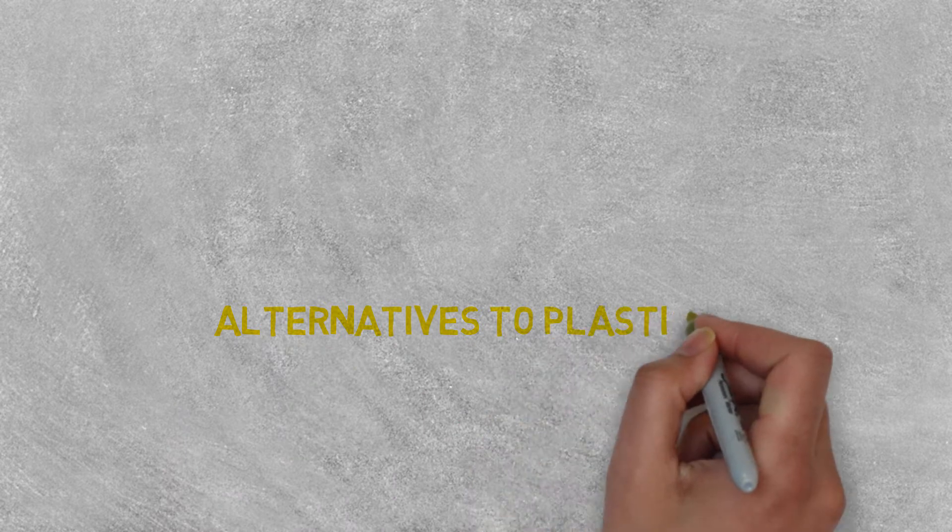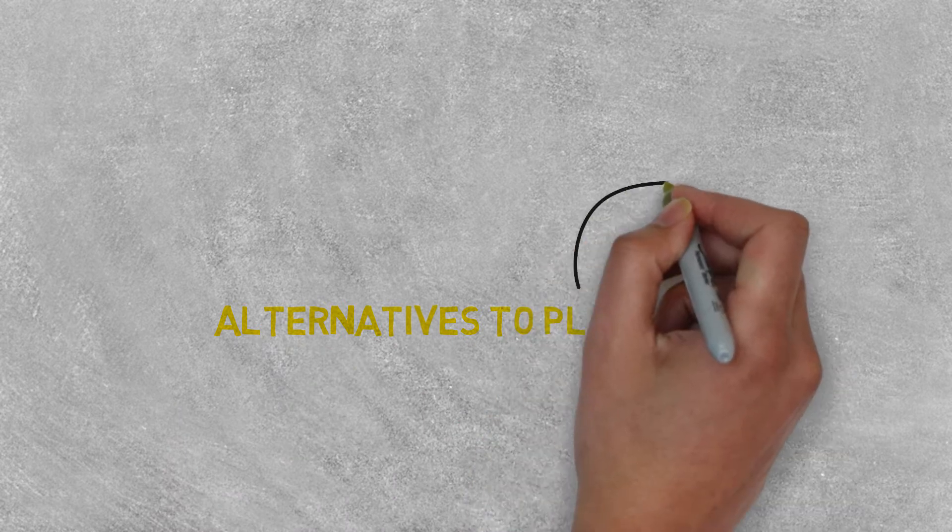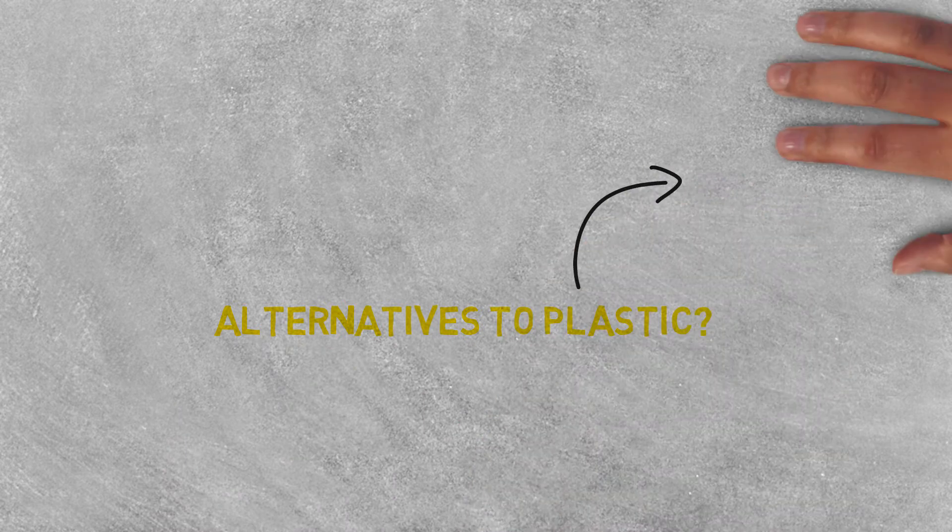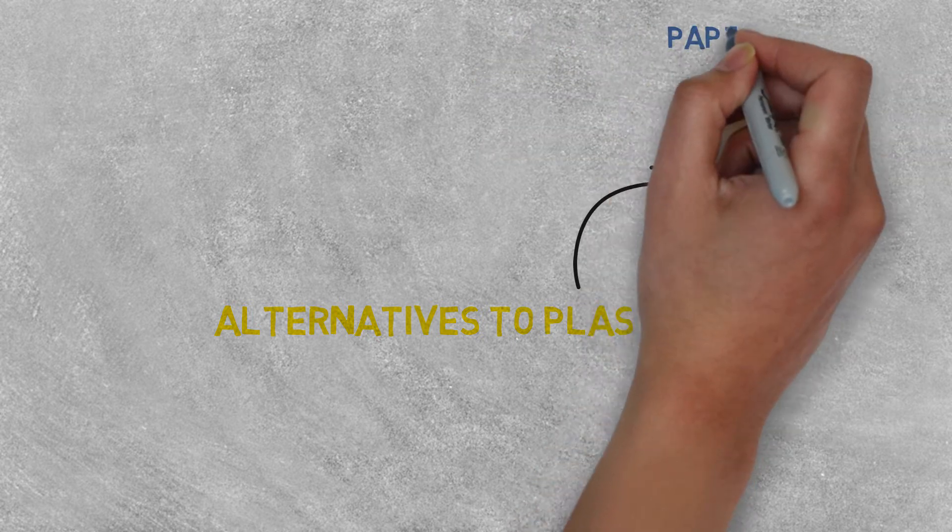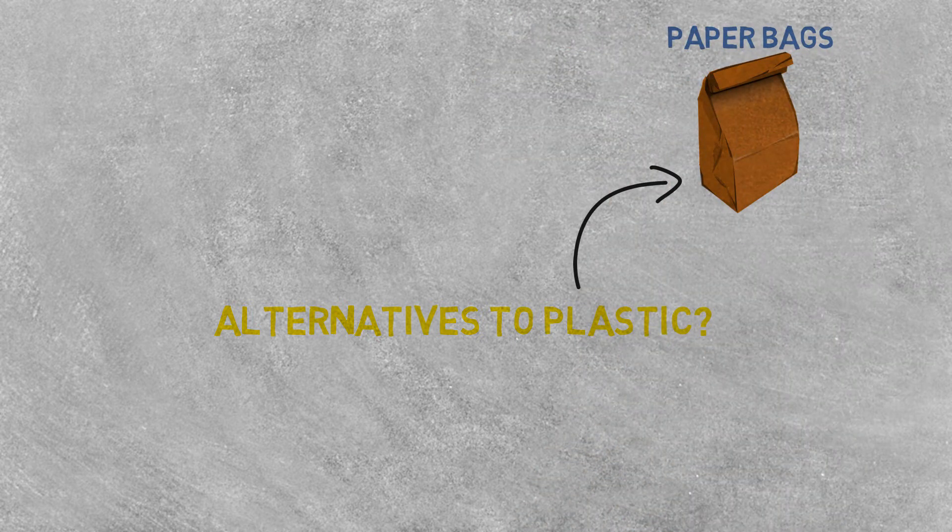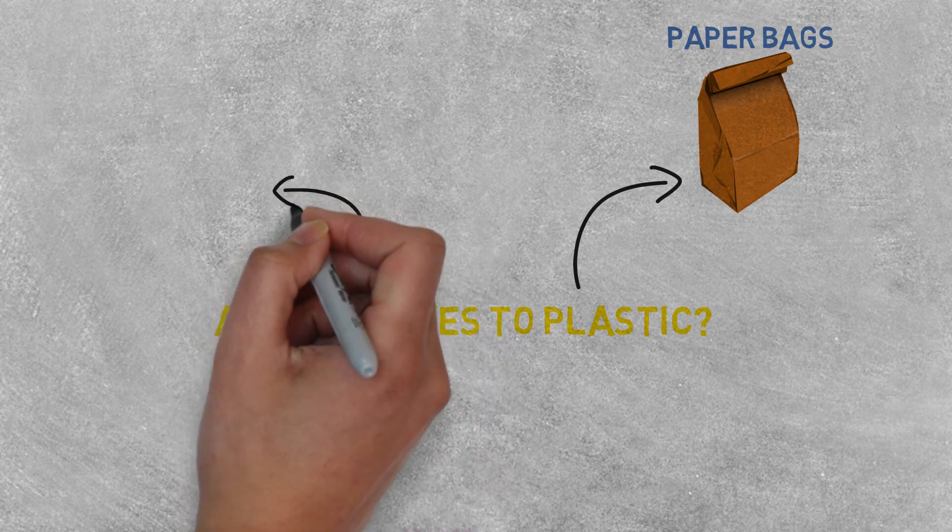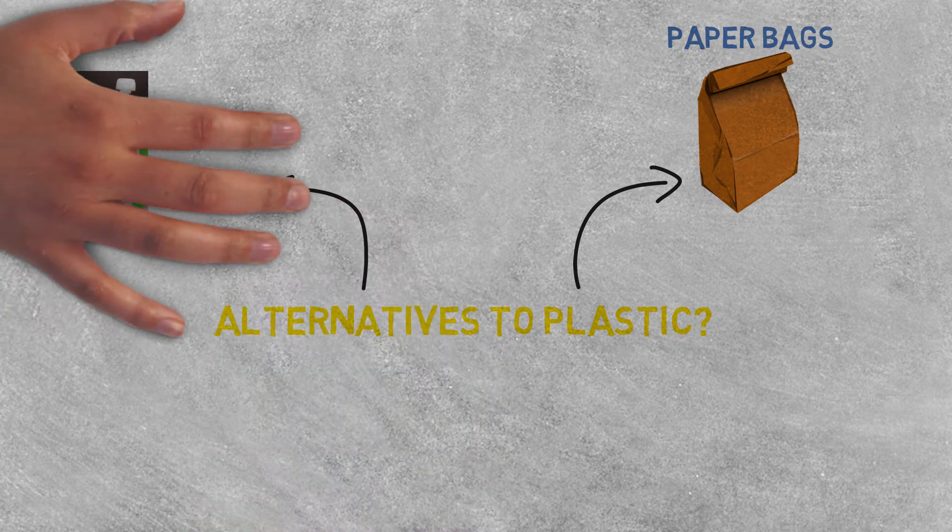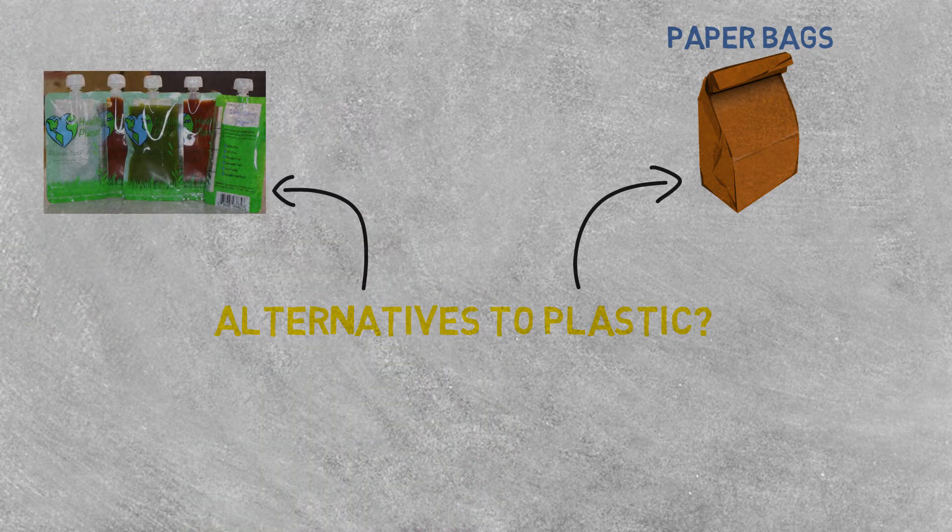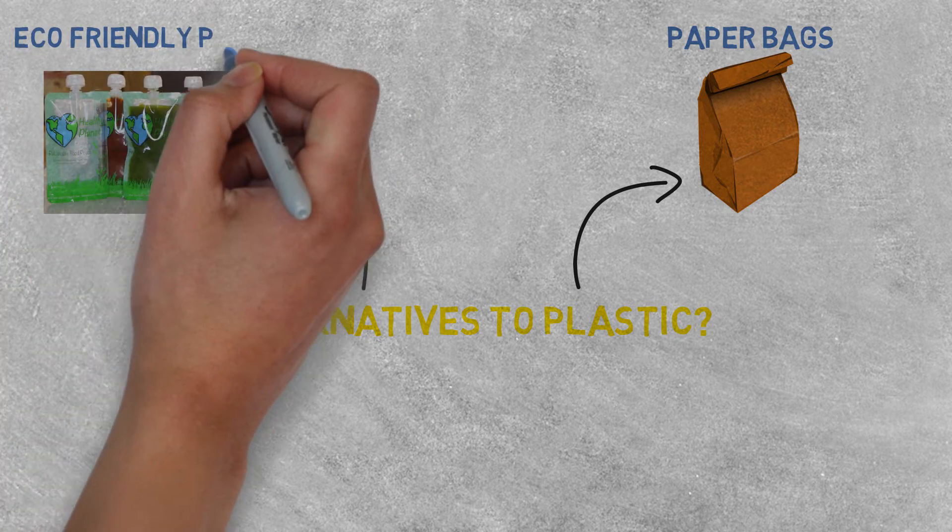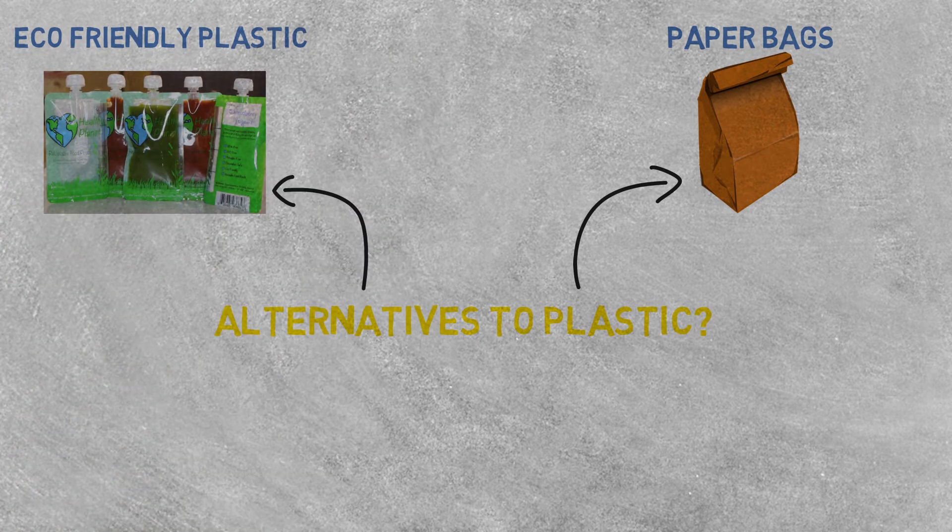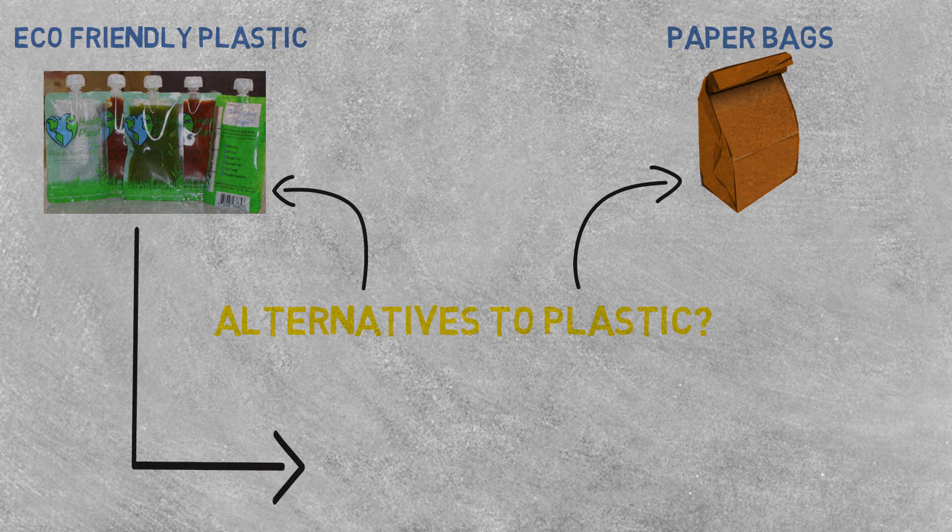So, what are the alternatives to plastic? We should use paper bags and eco-friendly plastics, because they both are biodegradable and they do not create pollution.